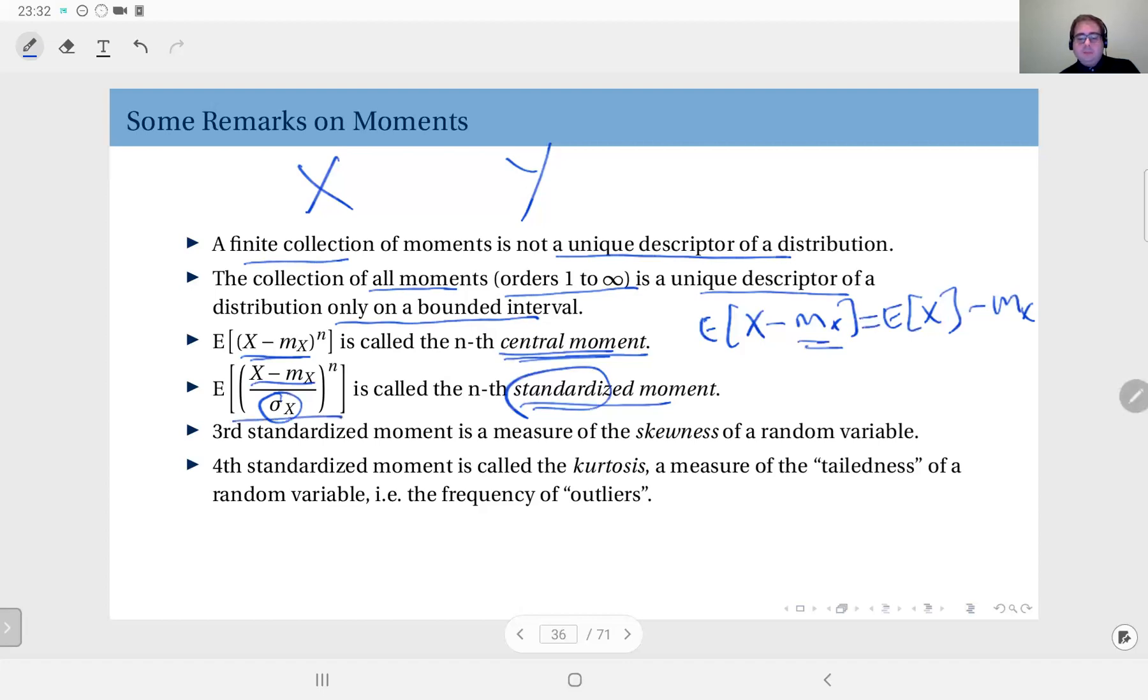So this here is the nth moment of a random variable which is shifted by its mean and divided by standard deviation. So it's called standardized moment.